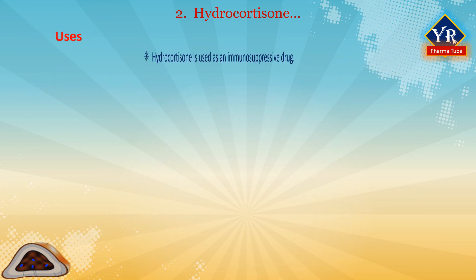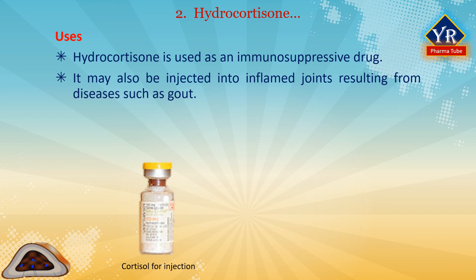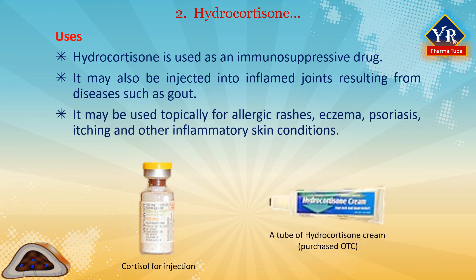Uses of hydrocortisone. Hydrocortisone is used as an immunosuppressive drug given by injection in the treatment of severe allergic reactions such as anaphylaxis and angioedema, in place of prednisolone in patients needing steroid treatment but unable to take oral medication, and perioperatively in patients on long-term steroid treatment to prevent an adrenal crisis. It may also be injected into inflamed joints resulting from diseases such as gout. It may be used topically for allergic rashes, eczema, psoriasis, itching, and other inflammatory skin conditions.